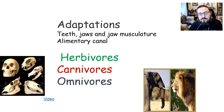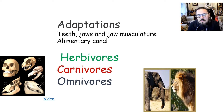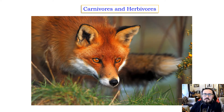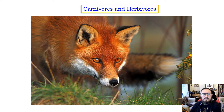We're looking at adaptations for nutrition, and today we're going to be looking at adaptations particularly around teeth and jaws, before we then start to look at the alimentary canal in following lessons. This session we're going to look at different types of dentition and musculature of jaws of carnivores and herbivores.